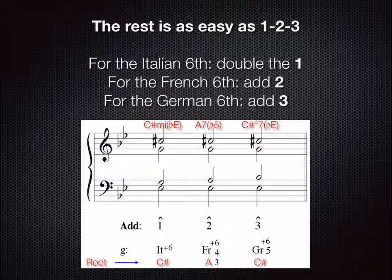In G minor, the dominant is D. So the dominant leading tone is C-sharp, which leads up to the D. And A is the dominant Phrygian leading tone — a half step above D.